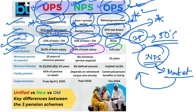The employer contribution in UPS is 18.5% of basic salary, which is higher than the employee contribution. In the case of the Old Pension Scheme, the government bore the full cost — as much pension was due, the entire amount was contributed by the employer. So in the old pension scheme, the government had a significant financial burden because the government had to give the full pension with no employee contribution.